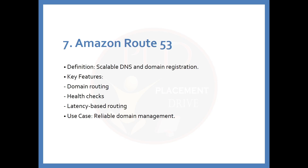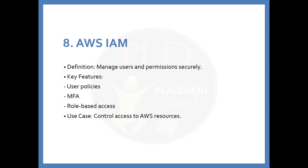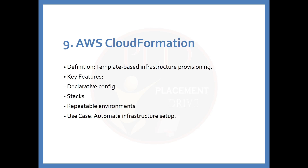The seventh service is Amazon Route 53. The definition is: a scalable DNS and domain registration service. Key features include domain routing, health checks, and latency-based routing. The use case is reliable domain management. The eighth service is AWS IAM. The definition is: manage users and permissions securely. Key features include user policies, MFA (multi-factor authentication), and role-based access. The use case is controlling access to AWS resources.